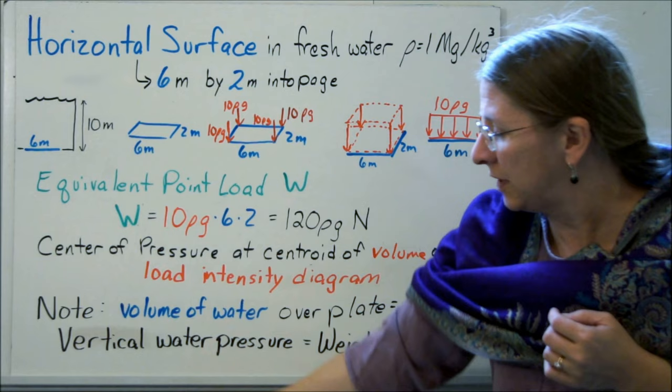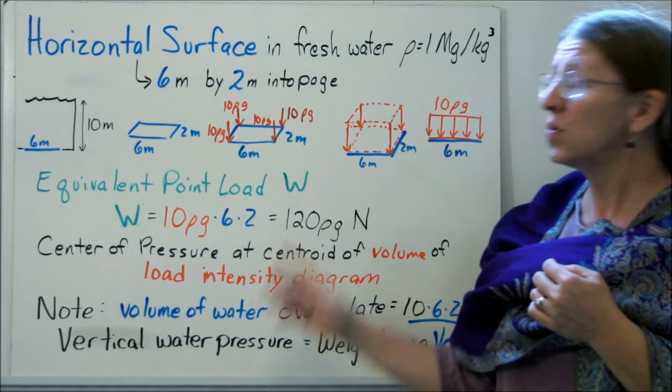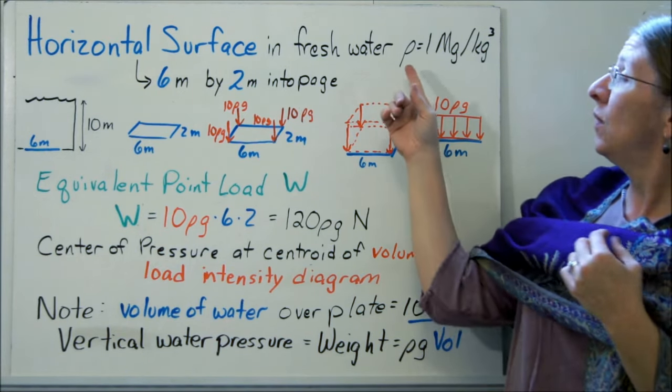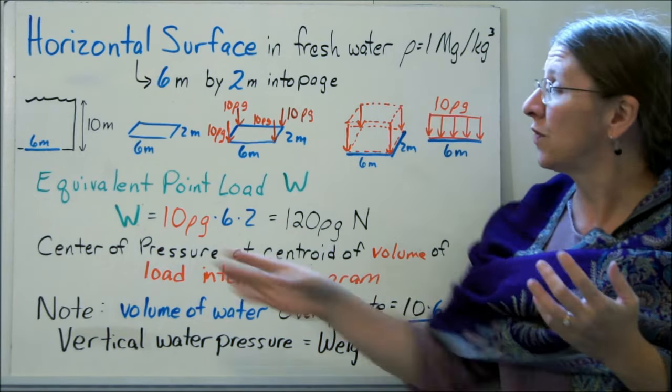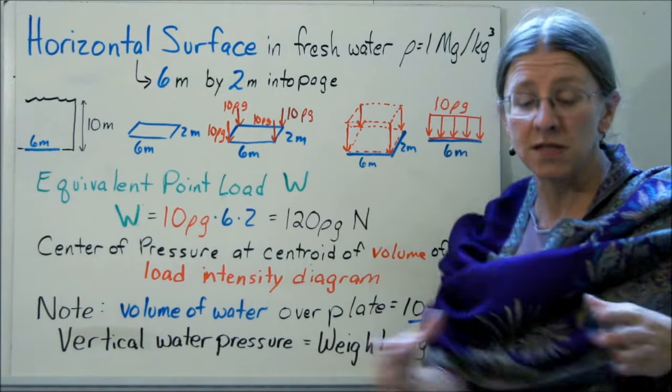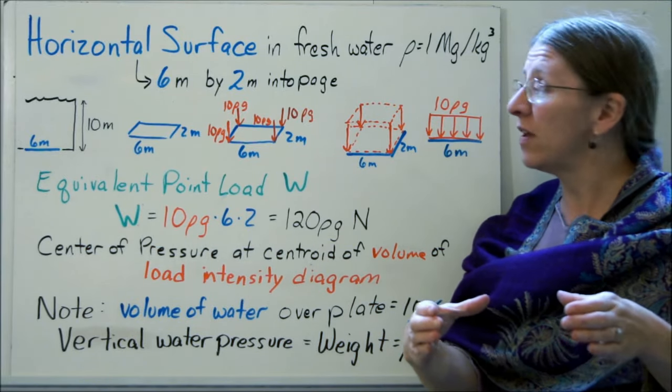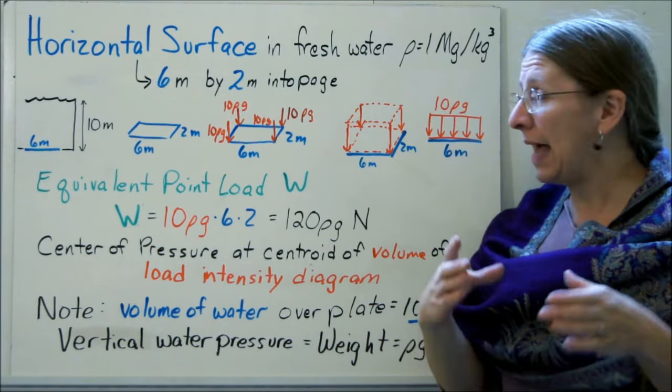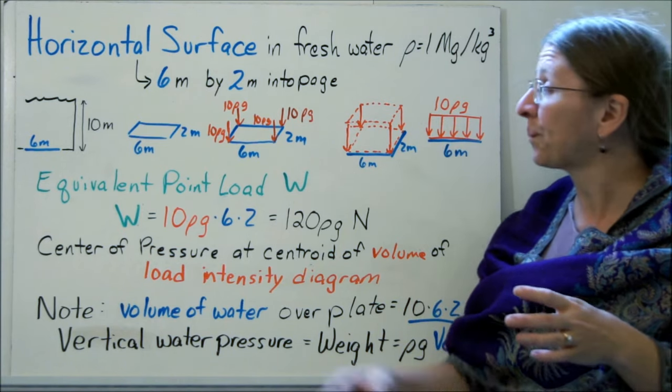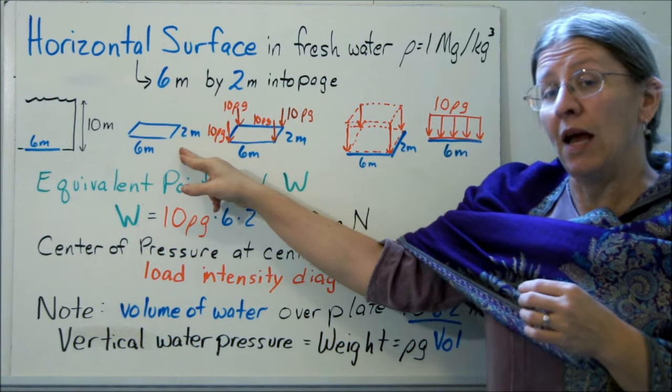As we go along here, I want to look at a couple different kinds of surfaces. The first one is the horizontal surface. If we're dealing with fresh water, here's my tank. I have some surface under there that's 6 meters by 2 meters and it's at 10 meters down in the water. That's my area, I've identified the area.